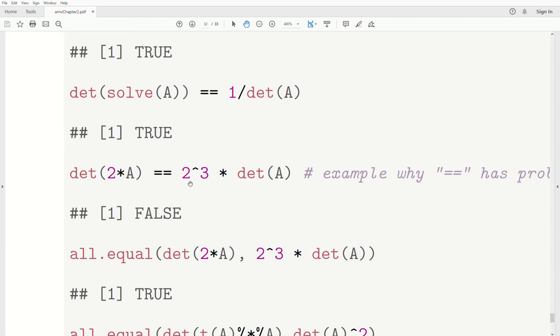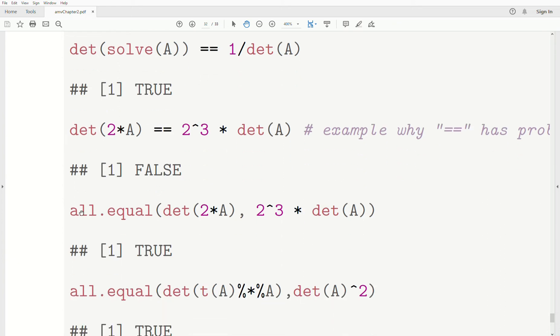Now, this example is determinant of two times A, is that equal to 2^3 times the determinant of A? And the answer is yes. But R brings back false. And so this is an example of the dangers of using == as a way to check if two things are equal. This all.equal function is a much better way to check. So we just bring the same values down and all.equal, of course, shows they're equal.